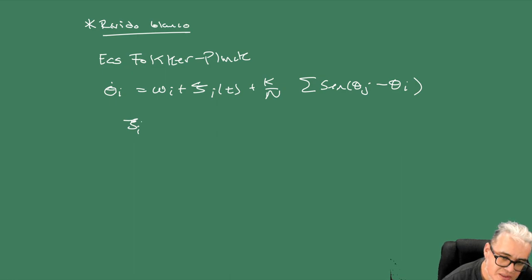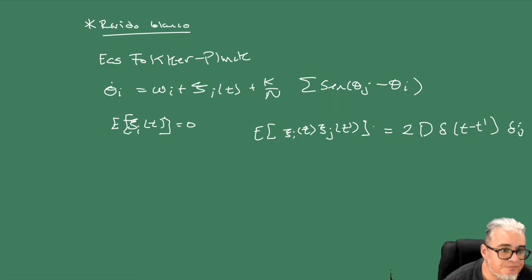Entonces van a tener esta forma las ecuaciones de Kuramoto, que son en esencia ecuaciones de Fokker-Planck: θ̇_i = ω_i más ξ_i(t) que es el ruido, más k sobre n por la suma del seno de las (θ_j - θ_i). La esperanza de la ξ_i en t es cero, y la esperanza de términos de la forma ξ_i(t) por ξ_j(t') va a ser como 2 por una D por la δ(t - t') por δ_{ij}.